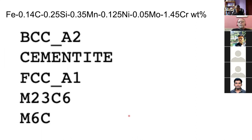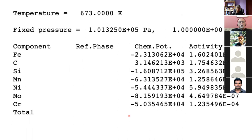When you run the calculation you select a temperature and pressure because free energy is a function of both. Here I'm working at atmospheric pressure — about 100,000 pascals — and at 673 K, because I'm calculating the tempering of martensite in that steel and want to temper at about 400 degrees centigrade.